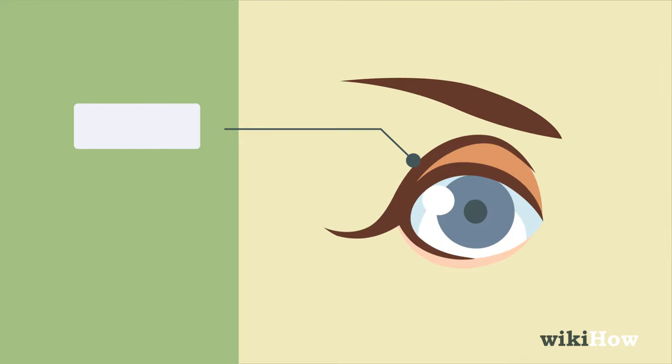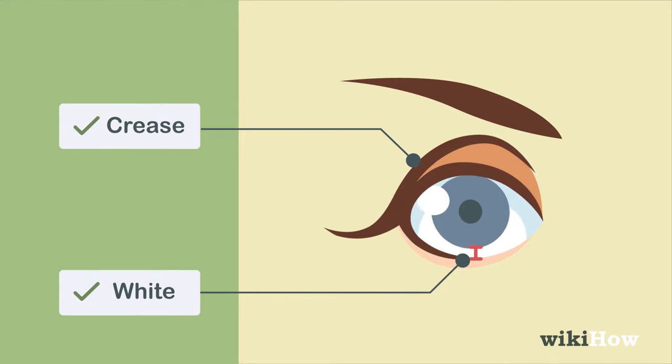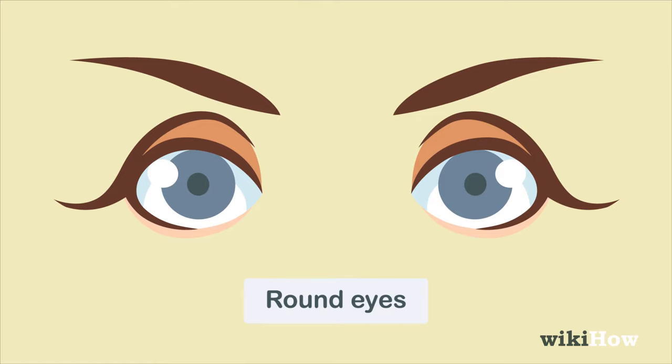If your upper eyelids do have a crease, and you can see the white of your eyes below your irises when you look straight ahead, you have round eyes.